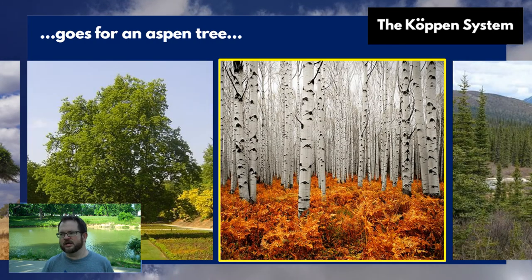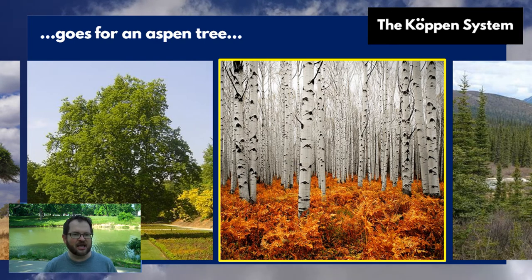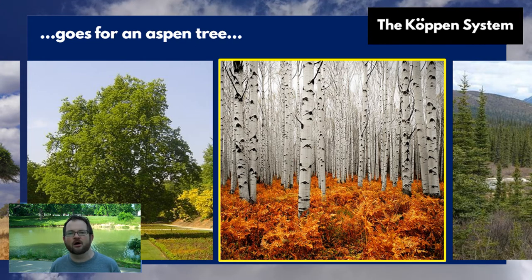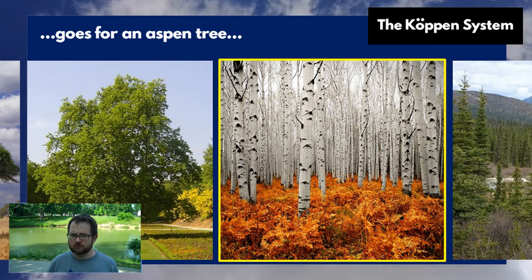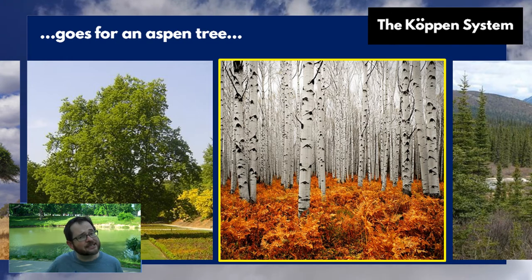The same goes for a stand of aspens. Aspens grow in certain kinds of environments — typically highland climates with severe winters — and they survive deep snowfall quite well. You see aspens and you know you're not in Hawaii, not in Florida, not in the Sahara Desert. There are only certain environments where aspens do well.